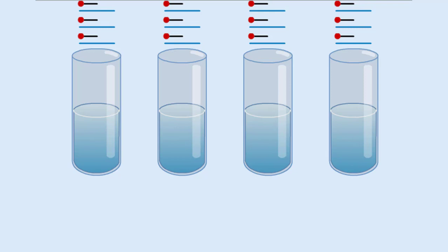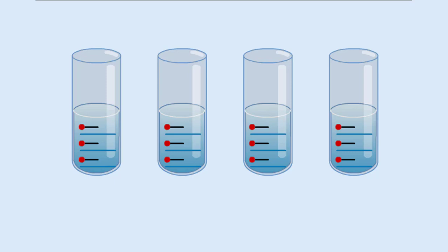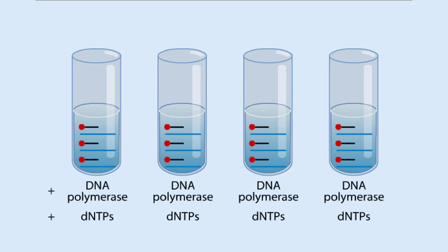The DNA primer mixture is split into four separate tubes. DNA polymerase and a solution of dNTPs are added to each tube.